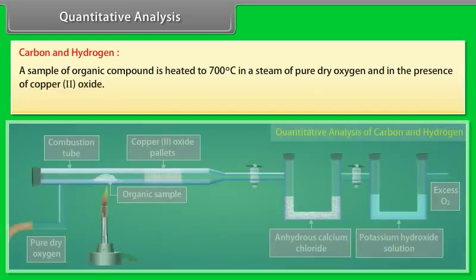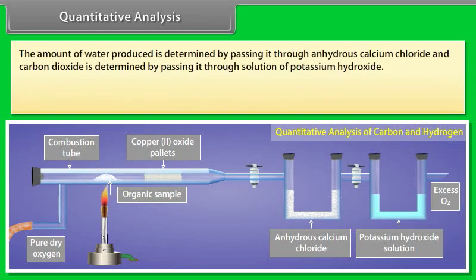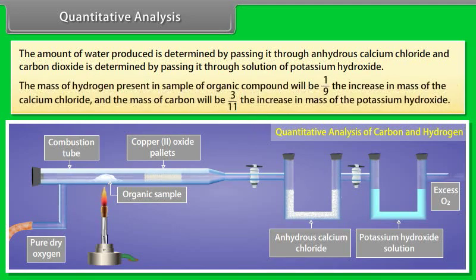Quantitative analysis — carbon and hydrogen: a sample of organic compound is heated to 700°C in a stream of pure dry oxygen in the presence of copper(II) oxide. Hydrogen is oxidized to water and carbon to carbon dioxide. The amount of water is determined by passing it through anhydrous calcium chloride. Carbon dioxide is determined by passing it through potassium hydroxide solution. Mass of hydrogen = (1/9) × increase in mass of calcium chloride; mass of carbon = (3/11) × increase in mass of potassium hydroxide.